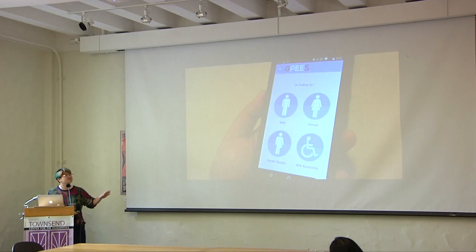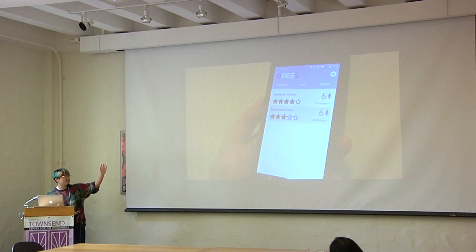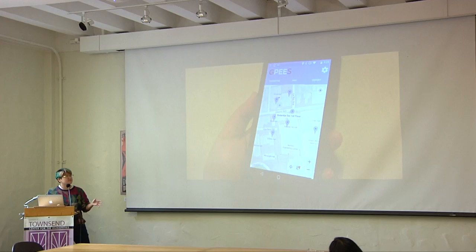Just a quick demo of the app. From the phone side, you can set your preferences such as what gender and accessibility level of restrooms you want to see. You'll see them in a list and also in a filtered map nearby your current location.